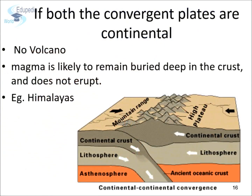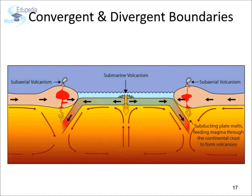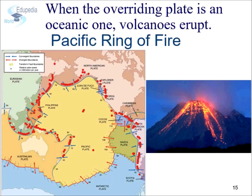If both plates are continental, like the Himalayas, magma is likely to remain buried deep in the crust and does not erupt. Volcanic activity tends to occur along subduction plate boundaries where one plate slides underneath another. The edge of the Pacific plate makes up a long subduction boundary with a huge number of earthquakes, and the majority of volcanic activity on earth occurs along these convergent boundaries. This is called the Pacific Ring of Fire, where over 75% of the world's volcanoes are found.